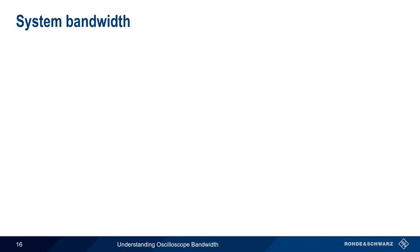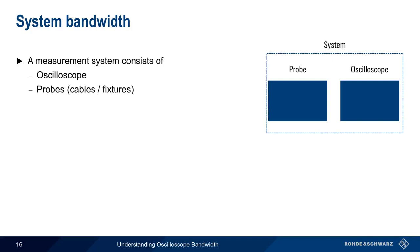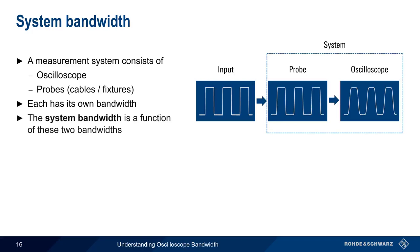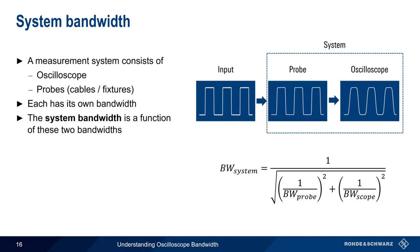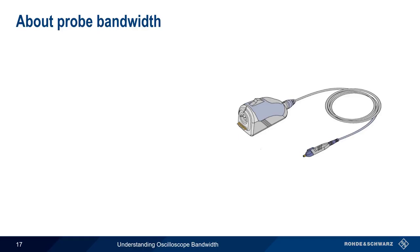Up to this point, we've been talking exclusively about the bandwidth of the scope, but it's very important to remember that our measurement system actually consists of two parts: the oscilloscope itself, but also the probes and other cables, fixtures, and accessories. Each of these has its own bandwidth, and when we measure an input signal, the result displayed on our oscilloscope is actually a function of both probe and scope bandwidth — that is, the overall system bandwidth. A simple formula can be used to calculate the overall system bandwidth from the individual bandwidths of the scope and the probes. System bandwidth is an important concept because in some, or perhaps many cases, our measurement is limited not by the bandwidth of the scope, but by the overall system bandwidth.